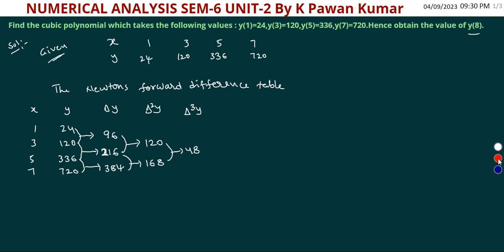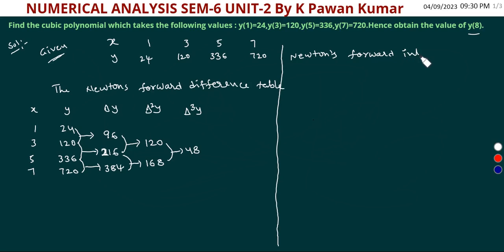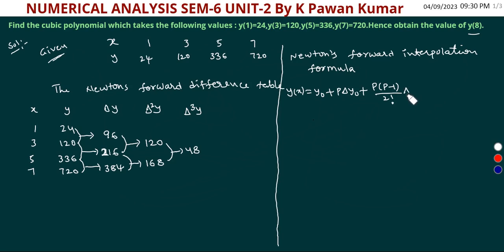Newton's forward interpolation formula is: y(x) = y₀ + p·Δy₀ + p(p−1)/2! · Δ²y₀ + p(p−1)(p−2)/3! · Δ³y₀.